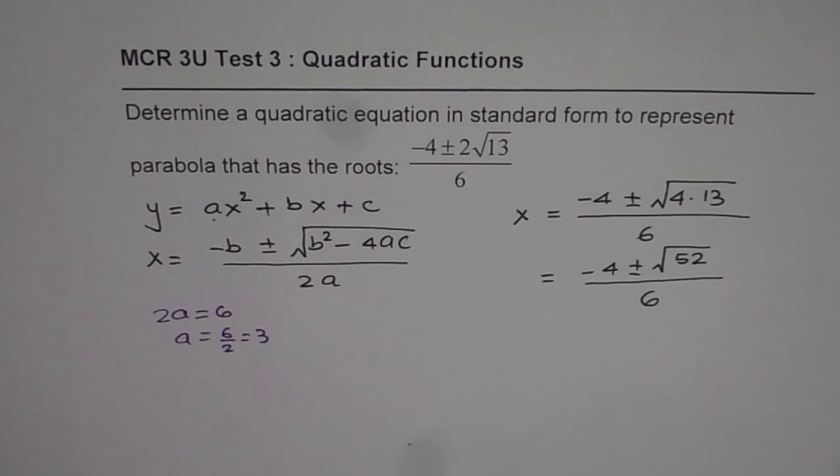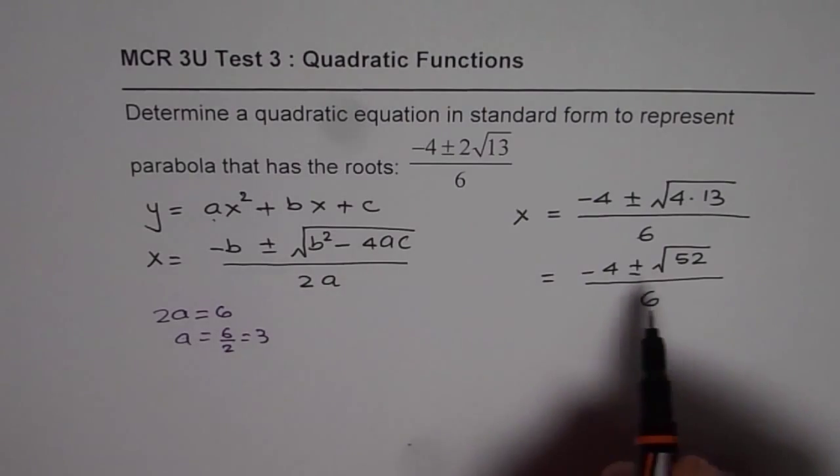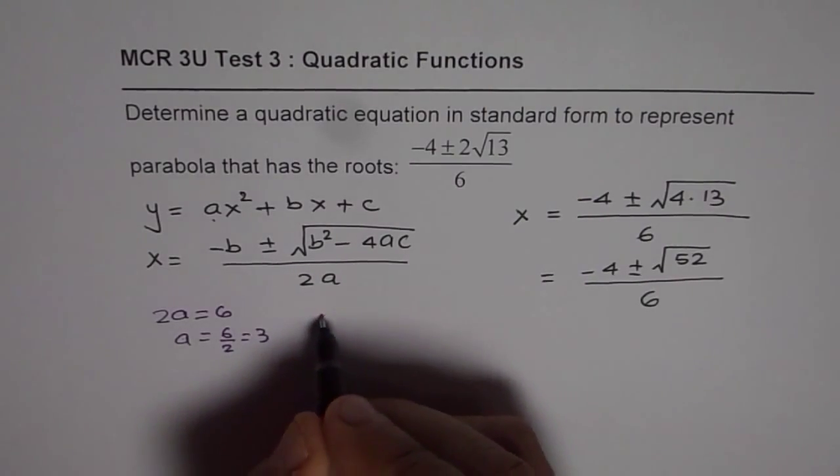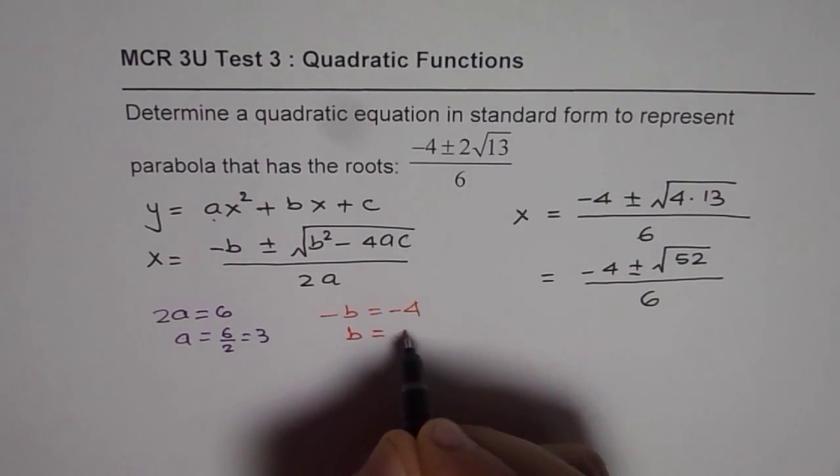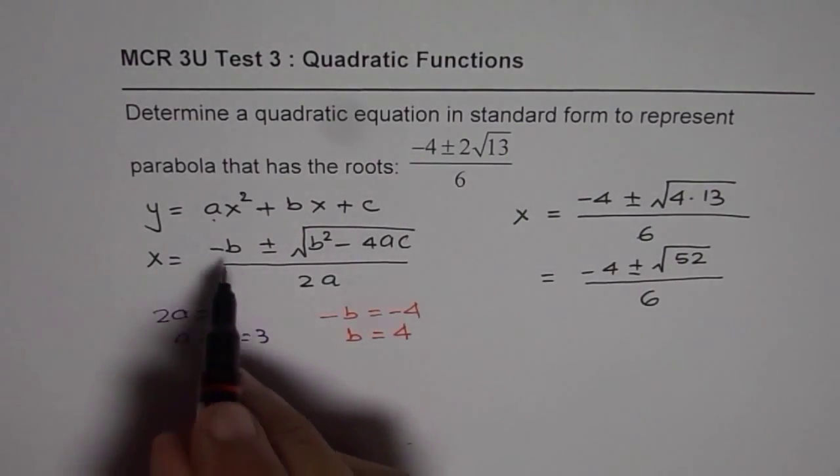Then we can calculate minus b. Minus b is minus 4 for us, so we get minus b equals minus 4 and that means b equals 4. So we get the value of b also.